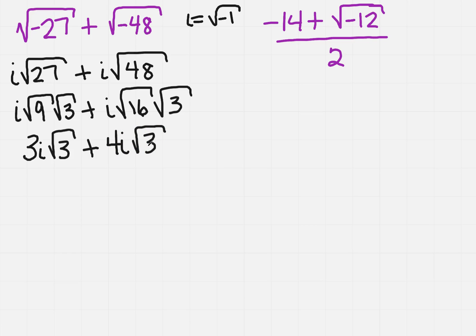Well, look at that. They both have the square root of 3. So that means they're like terms, so I can actually add these together. So now I have a total of 7i√3.